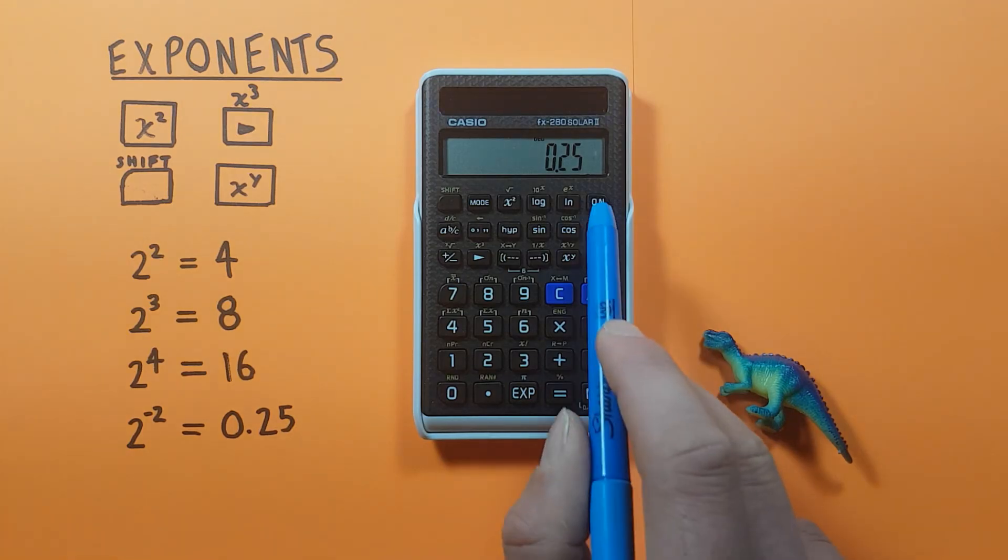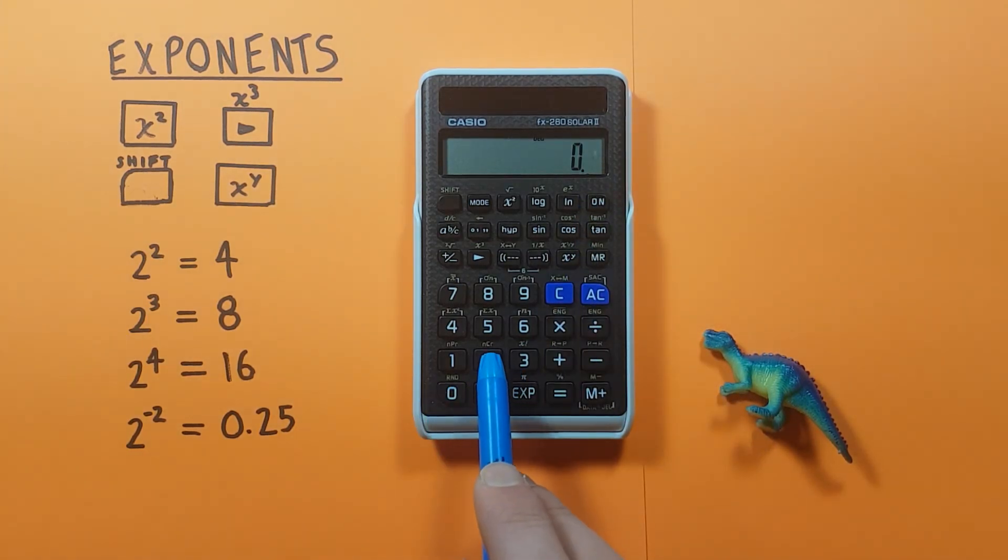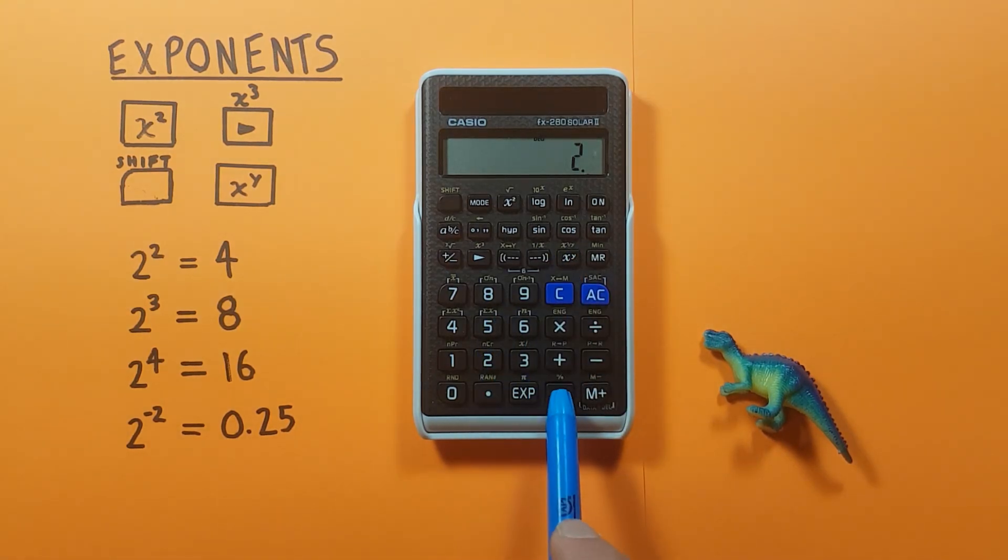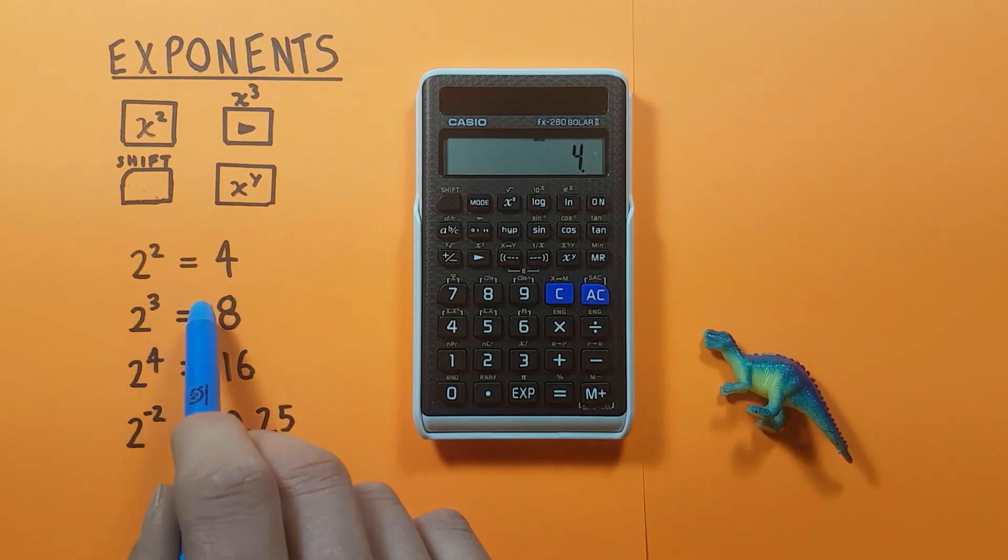We can also confirm this x to the y key works by trying it with a square, so 2 x to the y, 2 equals 4, which we know is correct.